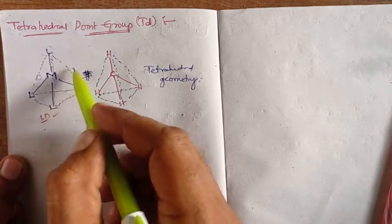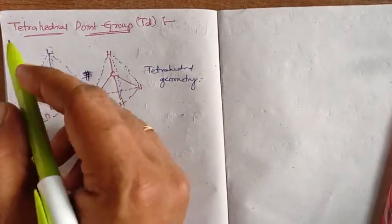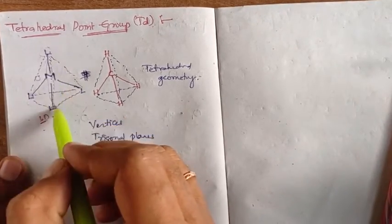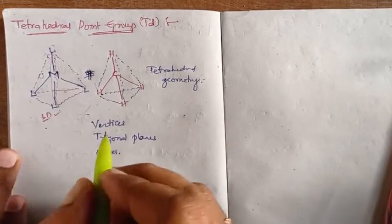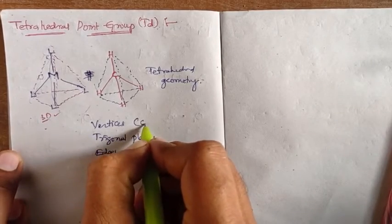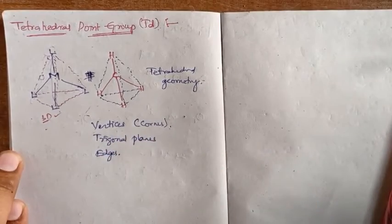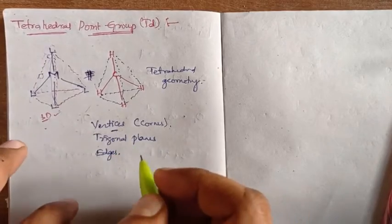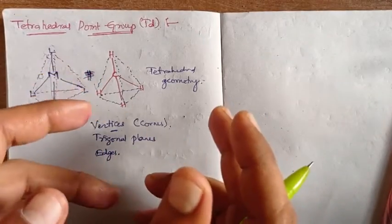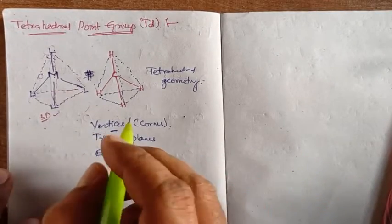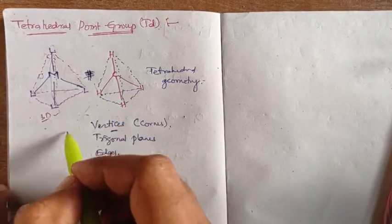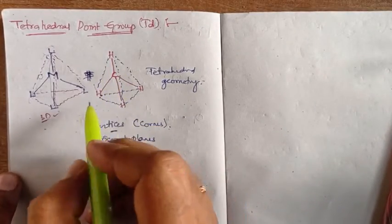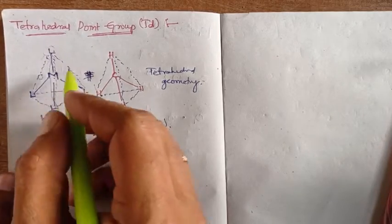The three ligands occupying the downward positions create an imaginary trigonal plane. Similarly, adding the top ligand with two of the lower ones creates another trigonal plane, and so on. The tetrahedral geometry will have four trigonal planes. Vertices means corner sides — in chemistry we express corners using the term 'vertices' (singular: vertex).